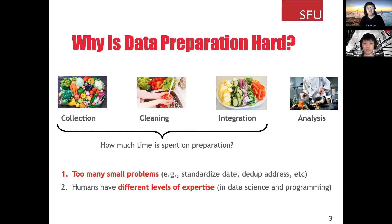Secondly, humans have different levels of expertise. For cooking, you may be new to cooking, or you may be a chef. Similarly, data scientists also have different backgrounds. Some of them are experienced in programming, but know little on the domain knowledge. Some of them are domain experts, but not familiar with programming. The diversity of users makes data preparation hard.